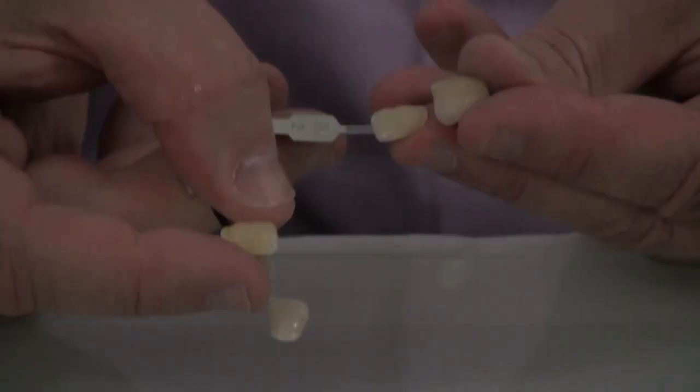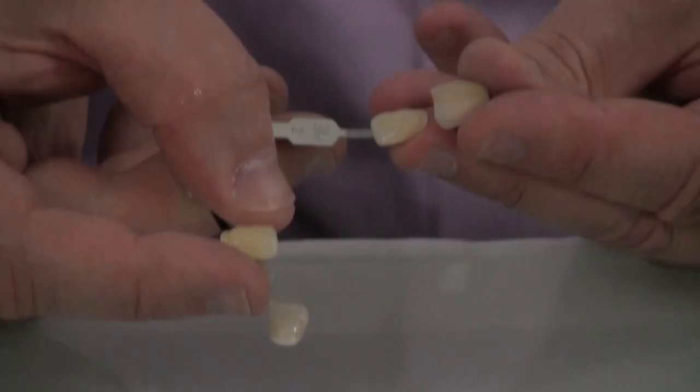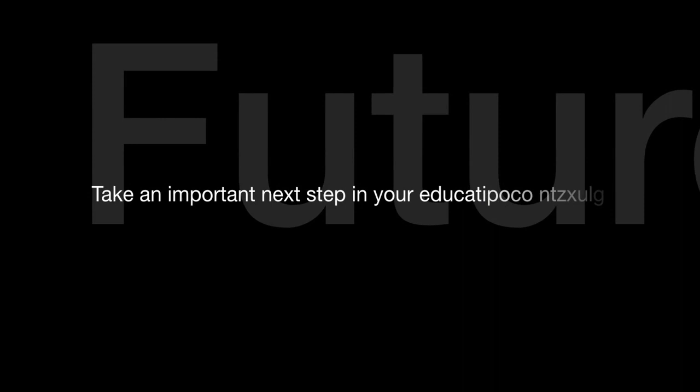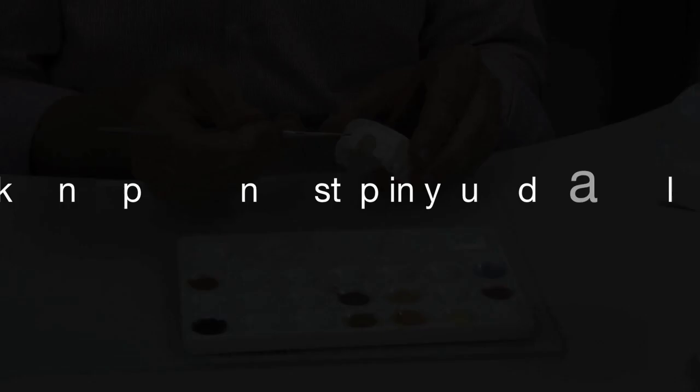And then a quick stain and glaze. As you can see, we're fairly close, and then make whatever modifications. If you wanted to accent the neck a little bit, certainly we have all the stains available for you. We are very close to the shade.